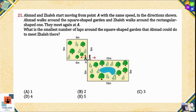Question 21: Ahmed and Zaheila start moving from point A with the same speed in the directions shown. Ahmed walks around the square-shaped garden and Zaheila walks around the rectangular-shaped one. They meet at point A. What is the smallest number of laps around the square-shaped garden that Ahmed could complete to meet Zaheila there?